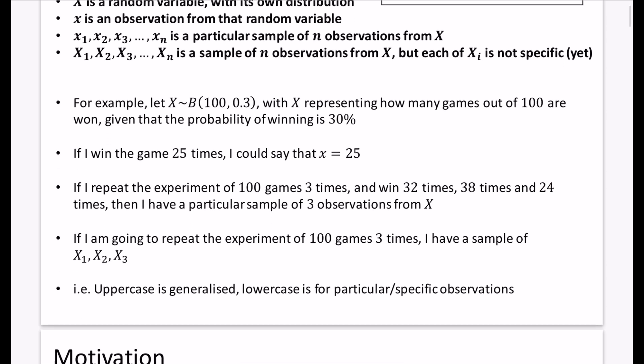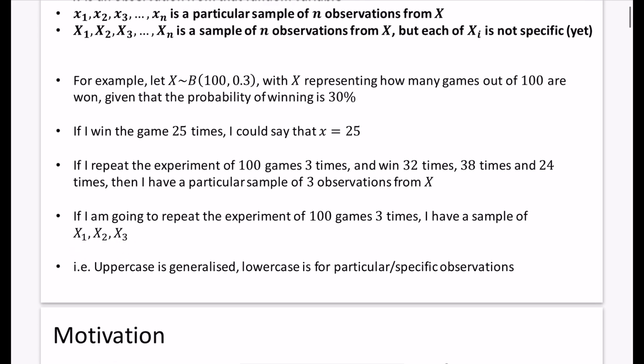If I'm going to repeat the experiment of 100 games three times, I will have a sample of X1, X2, X3, but I haven't actually got what the data is or what the observations from that distribution actually are. So my point that I'm making here is that if we are using an uppercase letter, it is generalized, we don't know what it's going to be, it's representing the whole distribution. Whereas if we use a lowercase letter, it's for a particular or specific observation that we have, and it is not referring to the whole distribution.